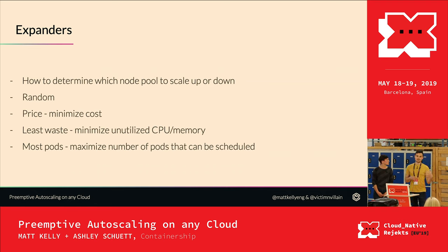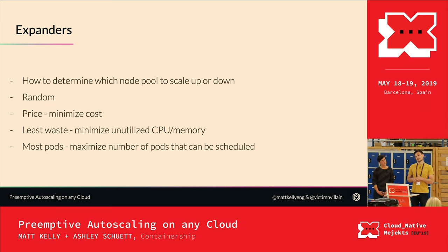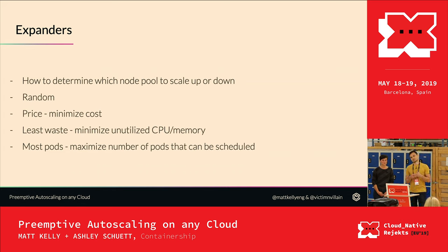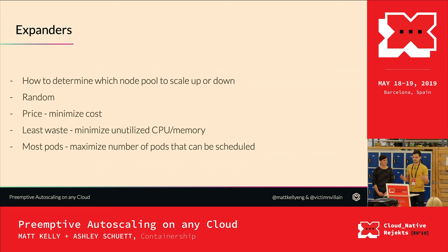The Kubernetes cluster autoscaler has a concept of expanders — which is how it makes decisions on which node pool to scale up or down when you have multiple node pools. There are a few: random (chooses a node pool at random), price (minimizes costs by scaling the cheapest node pool), least waste (adds a node to minimize unutilized CPU and memory across the system), and most pods (maximizes the number of pods that can be scheduled on the new node).